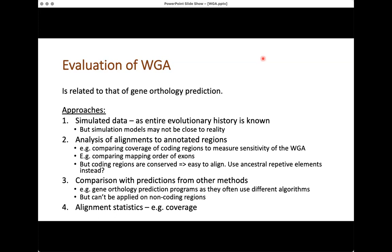Another approach is comparison with predictions from other methods — for example, gene orthology prediction programs. The advantage is that those methods use different algorithms, so the biases may not be the same, providing a double-check. However, orthology prediction programs cannot be applied to non-coding regions, which are also difficult to align because they tend to be quite variable. You should also always look at alignment statistics such as the coverage of your alignment.